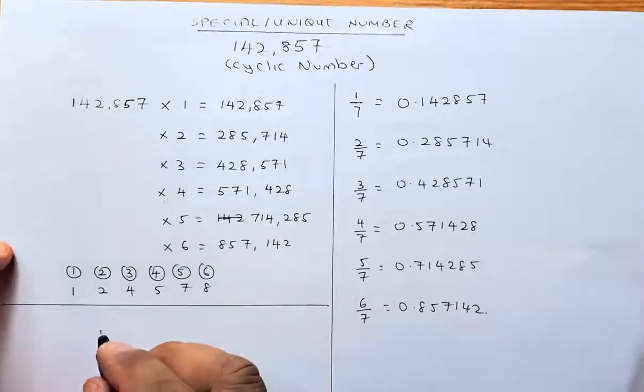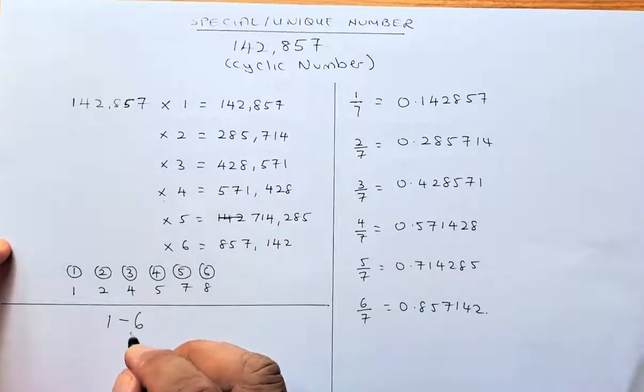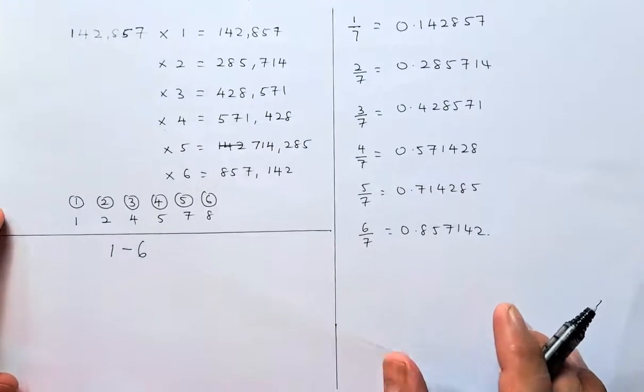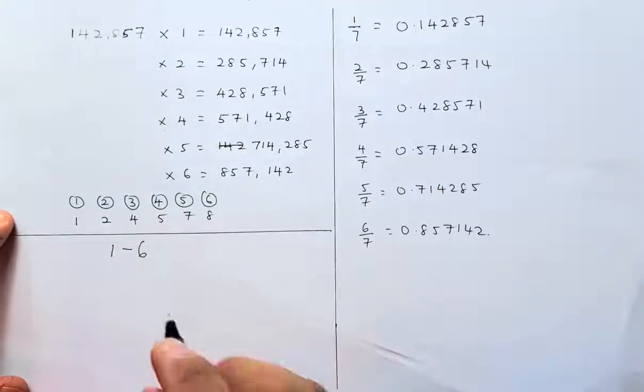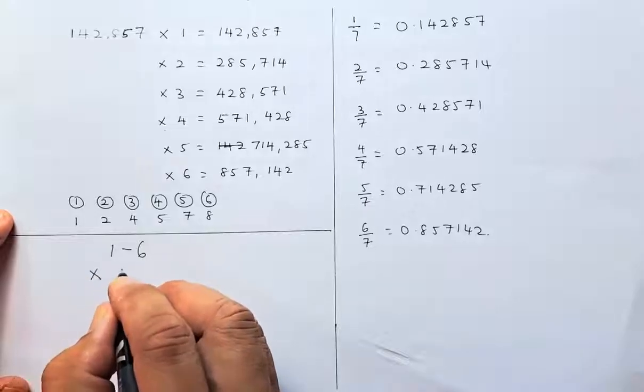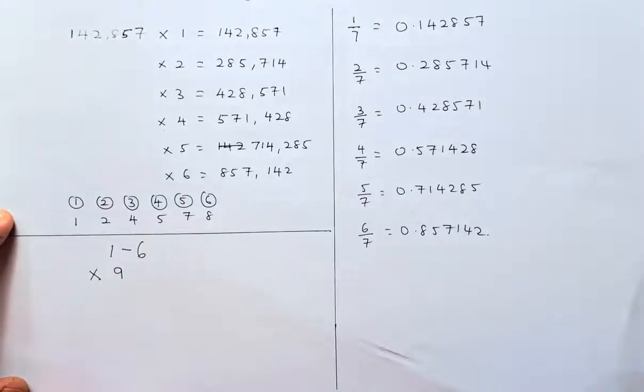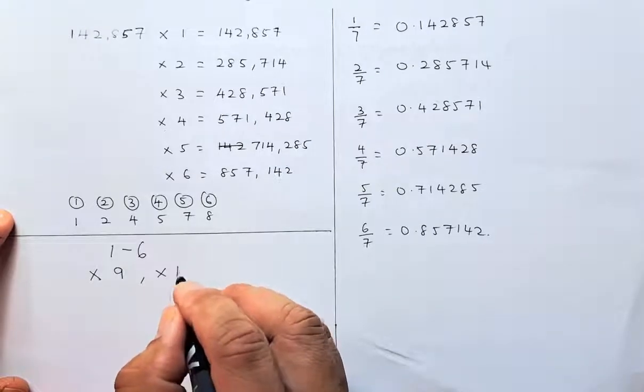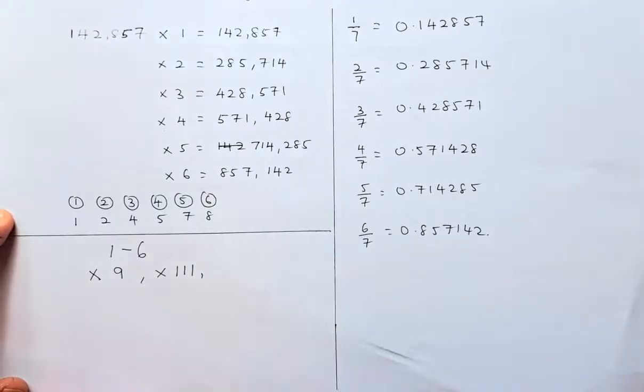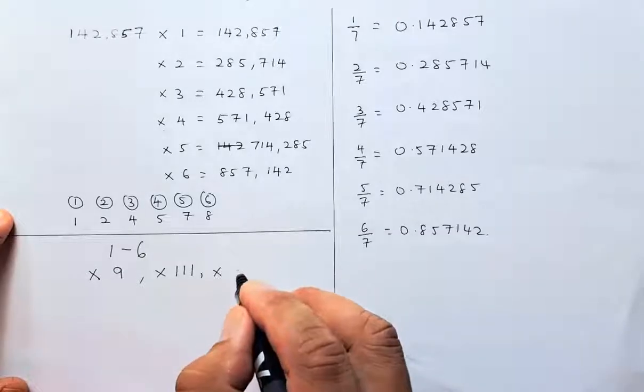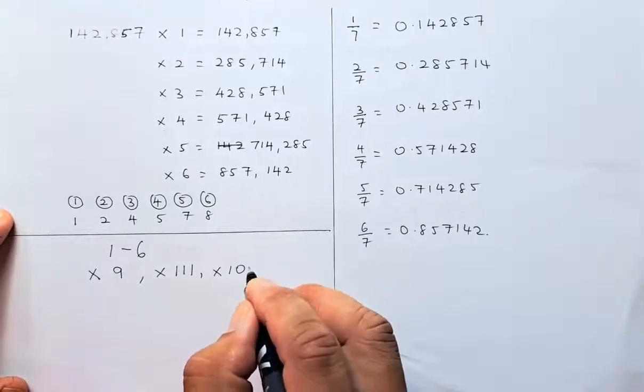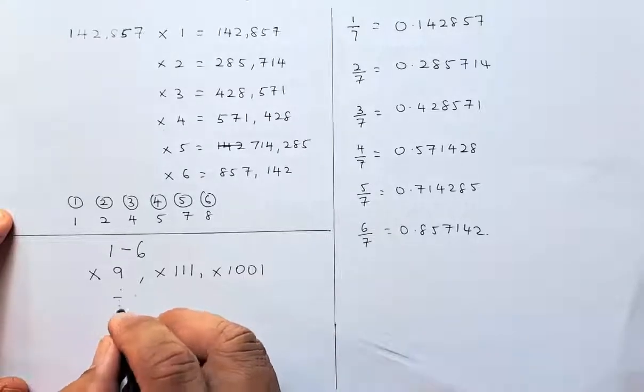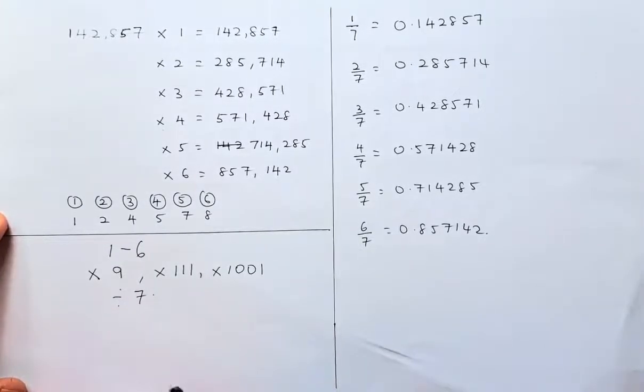Choose a number from 1 to 6. Multiply it by 9, then by 111, then by 1001, and finally divide by 7. What's your answer?